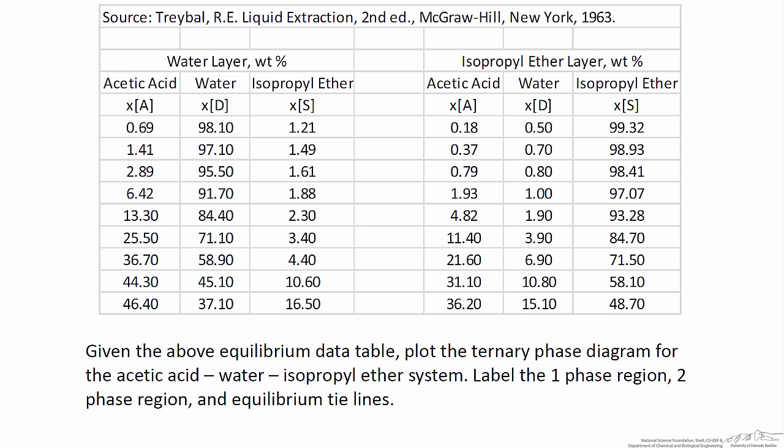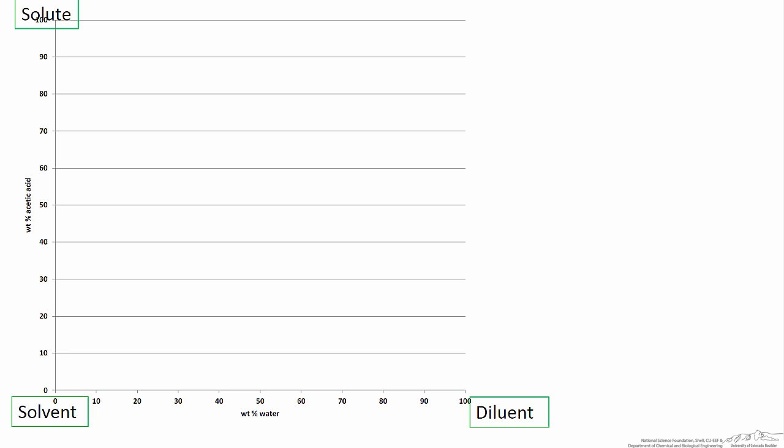In this screencast, we're going to develop a ternary phase diagram using an equilibrium data table. The first step in this process is simply to define your axes. Here I'm going to use a right triangle version of a ternary phase diagram, but the same process could be used to develop one using an equilateral triangle.